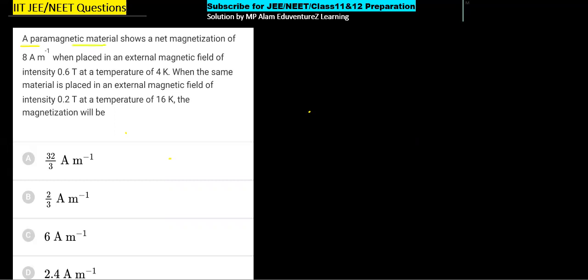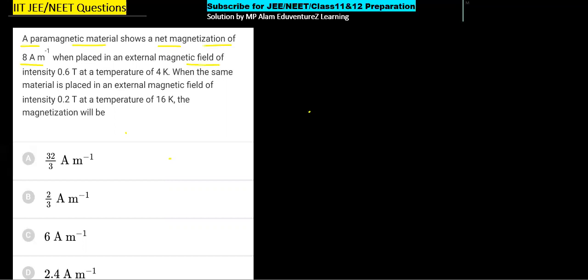A paramagnetic material shows a net magnetization of 8 ampere per meter when placed in an external magnetic field of intensity 0.6 tesla at a temperature of 4 kelvin. When the same material is placed in an external magnetic field of intensity 0.2 tesla at a temperature of 16 kelvin, the magnetization will be?